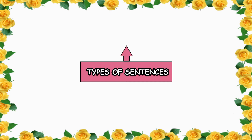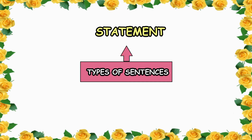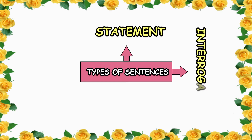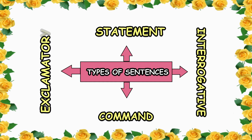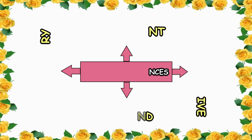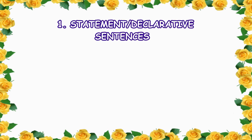All these groups of words are complete sentences because they are conveying a complete thought. Now, depending on the purpose, there are four basic types of sentences: number one, statement; number two, interrogative; number three, command; and number four, exclamatory.